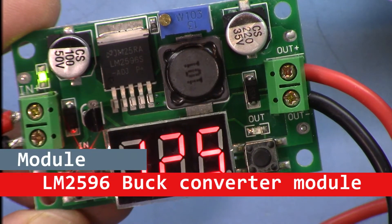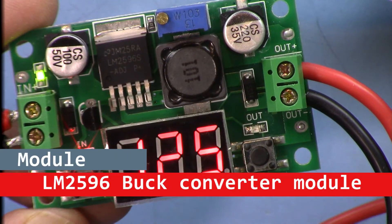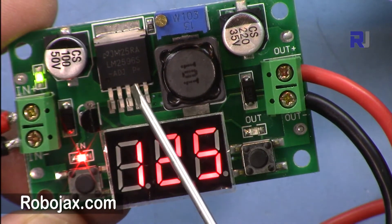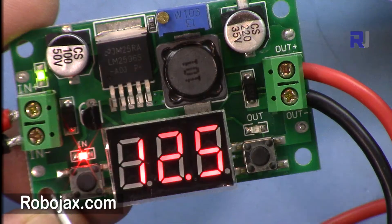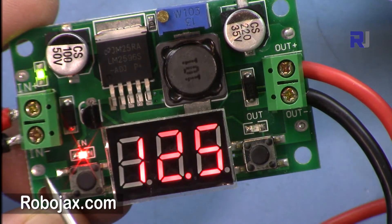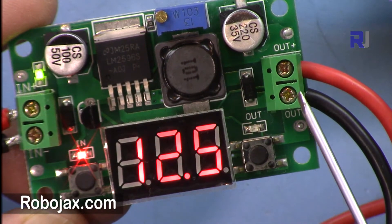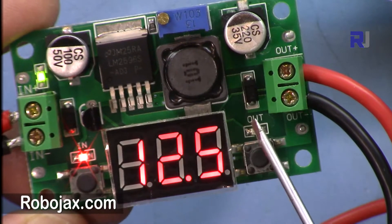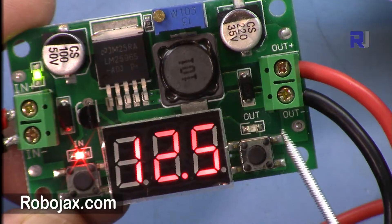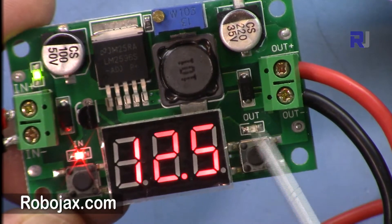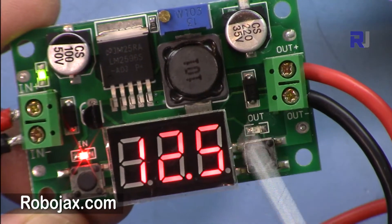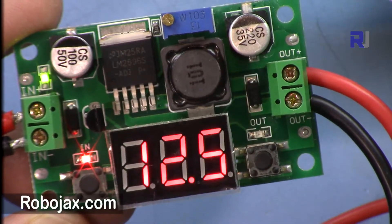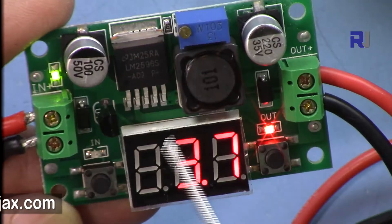Hi, welcome to Robojax. In this video we are going to do a test review of this LM2596 regulator with input of 4 to 40 volts and output of regulated 1.25 to 37 volts with display. We are going to test if this can handle up to 3 ampere under different voltage conditions. This is a step-down converter.